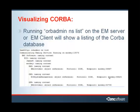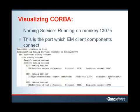Running Orbitmin NSList on the EM Server or EM Clients will show you a listing of the CORBA database. In this example, the machine Monkey is running the Naming Service on port 13075. This is the port which the EM Client Components connect to in order to get a listing of the CORBA database.